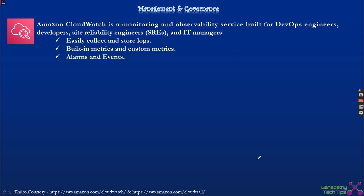AWS CloudWatch is the monitoring and observability service provided by AWS. People who are working with AWS know CloudWatch very well. CloudWatch is more of a monitoring service which provides insights and various different parameters related to different AWS resources. For example, if you want to know the performance of your EC2 machine, you can install the CloudWatch agents on the EC2 machine, and it will send the logs to CloudWatch in either one minute or five minute intervals.